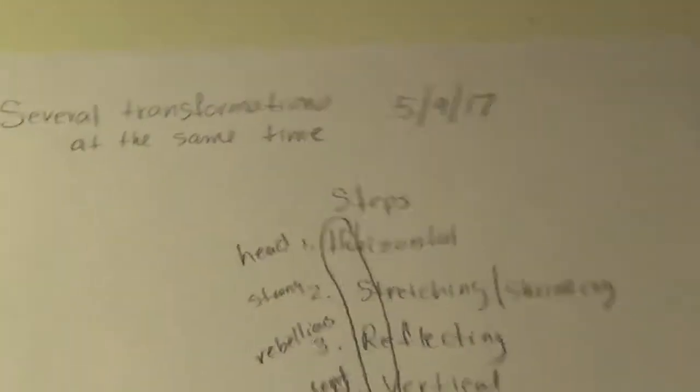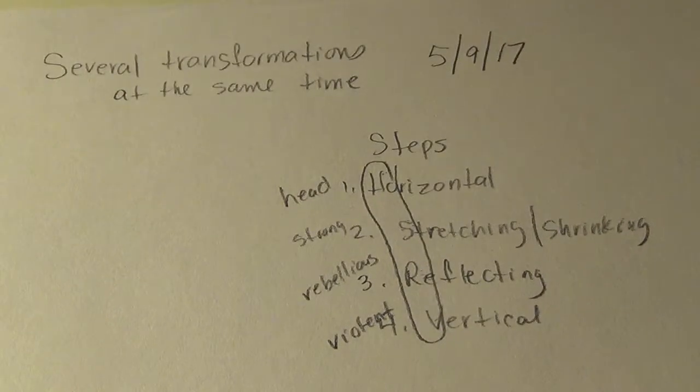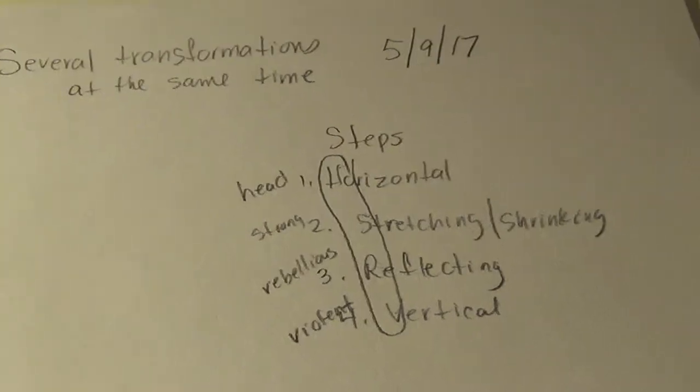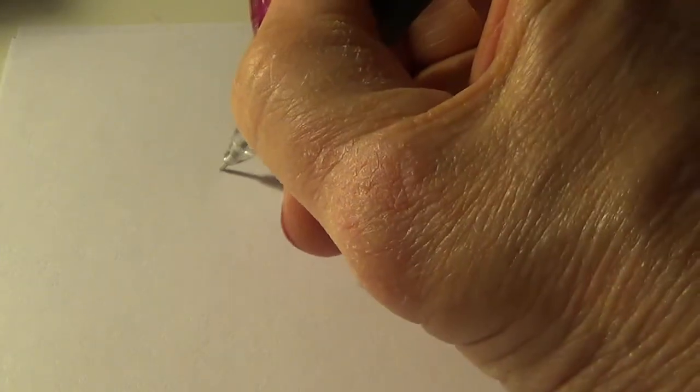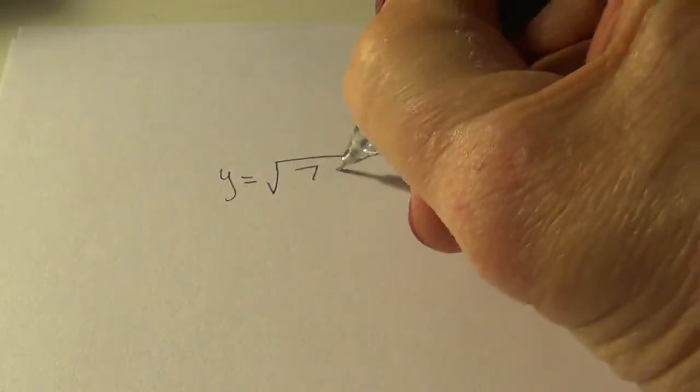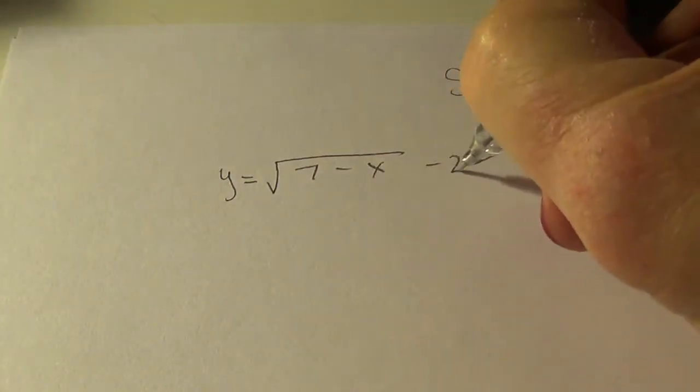Okay, I'm not sure what's going through my mind today, but that's what came out. Alright, so let's practice. I'll show you two and you do one for me. So we have y equals square root of 7 minus x minus 2.